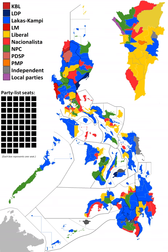Cavite 1st: Justice Secretary Agnes Devanadera is running for Congress. Devanadera resigned as Justice Secretary on February 25, 2010, after the Supreme Court ruled appointive officials running for office are deemed resigned. She will face incumbent Wilfredo Mark Iñigo of the Nationalista Party. Iñigo won with 56% of the vote as against Devanadera's 42%.